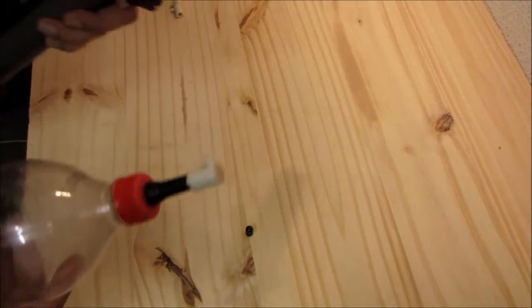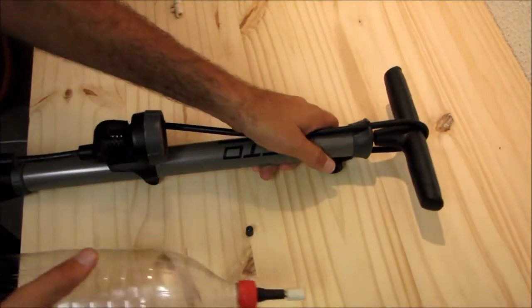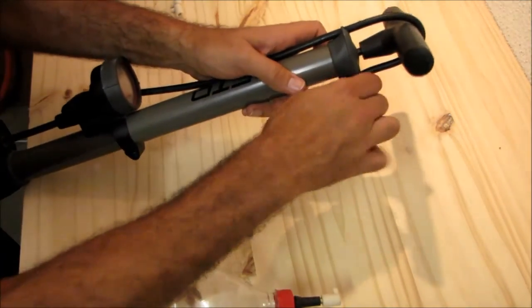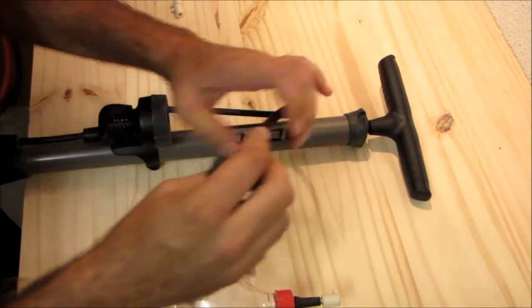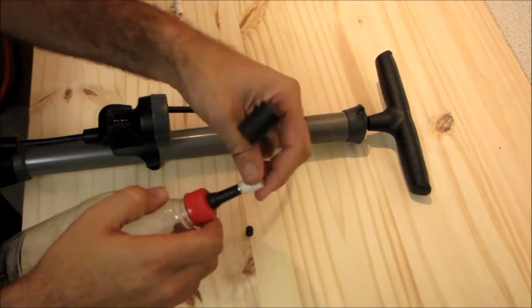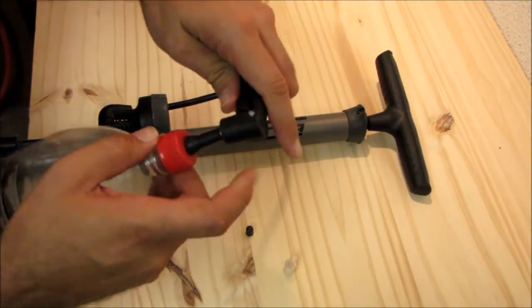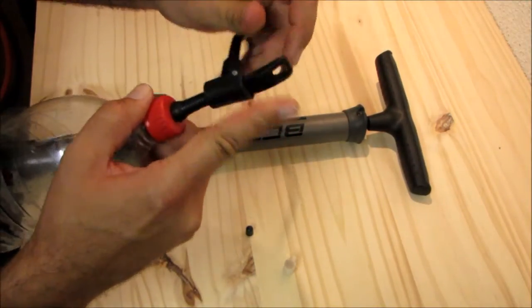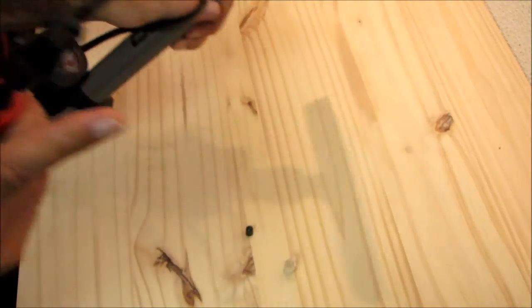I use a stock standard bicycle pump with your Schrader valve. Take your top off, slot it on, lock it in place, and pump away.